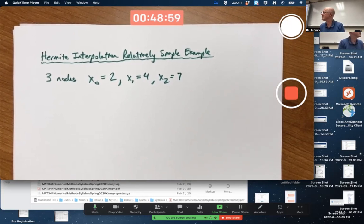With Hermite Interpolation, it's a generalization of Lagrange Interpolation. Not only are you trying to match function values, but also derivative values.